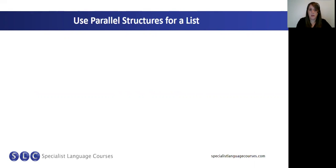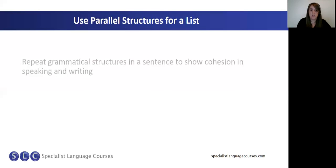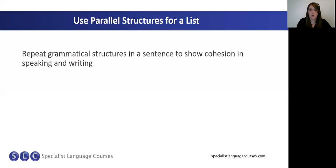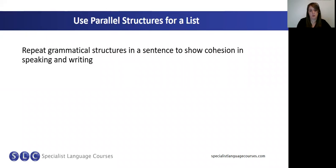We can use parallel structures for a list. In writing task two, you may need to give some examples, and you may want to give more than one example, in which case you can use parallel structures. We repeat grammatical structures in a sentence to show cohesion in speaking and writing.